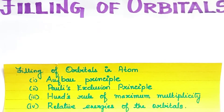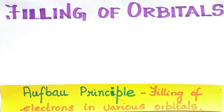In this video, we are going to discuss Hund's Rule of Maximum Multiplicity. Electrons are filled in orbitals starting from the lowest energy orbital first — that means higher energy orbitals are filled after, based on the Aufbau Principle.